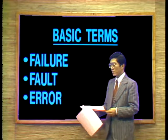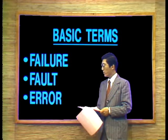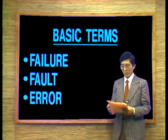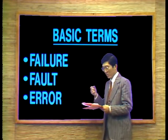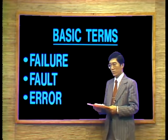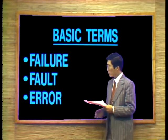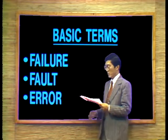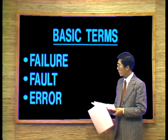Some basic terms used very often in reliability theory include: failure, fault, and error. Failure means any departure of program output from requirements as the program is executed. Fault stands for the malfunction in hardware, software, or the human component of a computing system. Error is the manifestation of a fault — a fault will be realized into an error of the system.